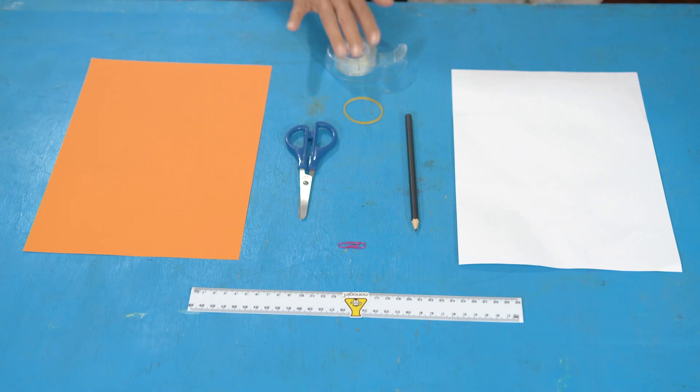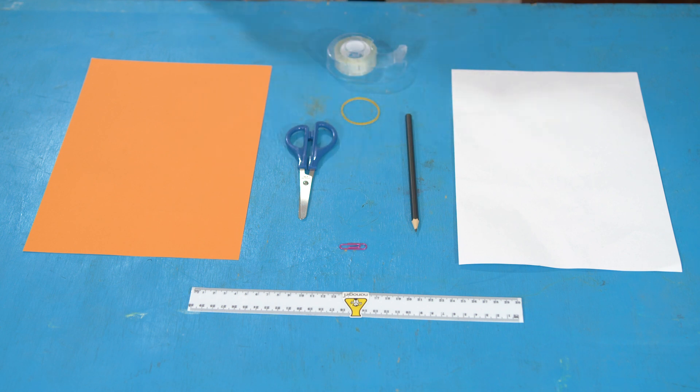For this experiment you will need scissors, tape, a paperclip, a large elastic band or a hair elastic, a sheet of thin card, some plain paper, a ruler, and a pencil.